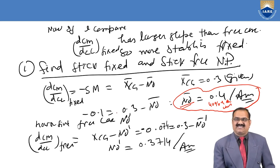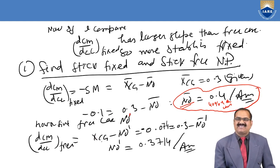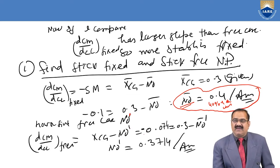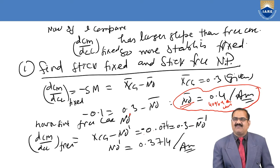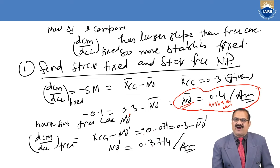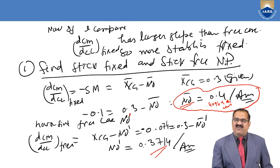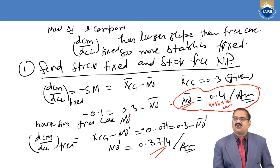For the stick free case: dCM/dCL_free = x_CG − NP_free. With dCM/dCL_free = −0.0714 and x_CG = 0.3: −0.0714 = 0.3 − NP_free, so NP_free = 0.3714. The neutral point (stick free) is 0.3714. Note that NP_free is less than NP_fixed (0.4), as expected.